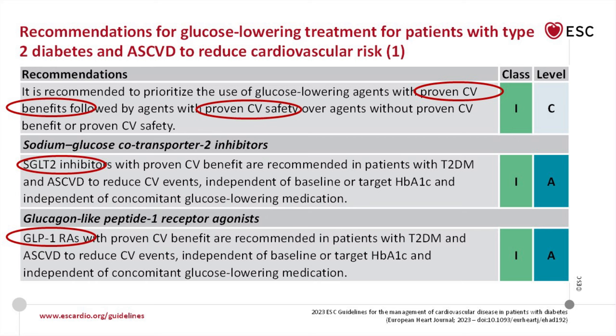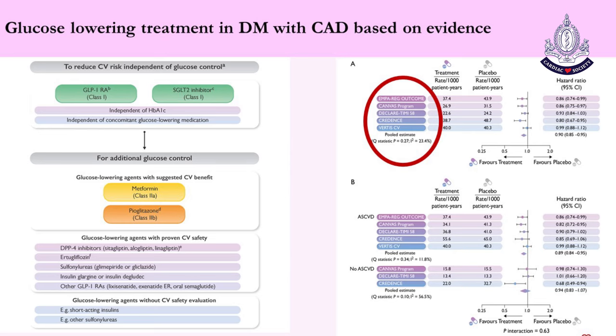This is the flowchart. To reduce CV risk independent of glucose control, SGLT2 inhibitors and GLP-1 receptor agonists are used with Class I recommendation independent of HbA1c level and concomitant glucose-lowering medications. If additional glucose control is needed, agents with suggested CV benefit such as metformin (Class 2A) or pioglitazone (Class 2B, if no heart failure signs) are chosen. Other glucose-lowering agents with proven CV safety include DPP-4 inhibitors, empagliflozin (in this group only for ertugliflozin), sulfonylureas such as glimepiride or gliclazide, insulin glargine or degludec, and other GLP-1 receptor agonists. These are based on landmark clinical trials including EMPA-REG, CANVAS, DECLARE-TIMI, and others.